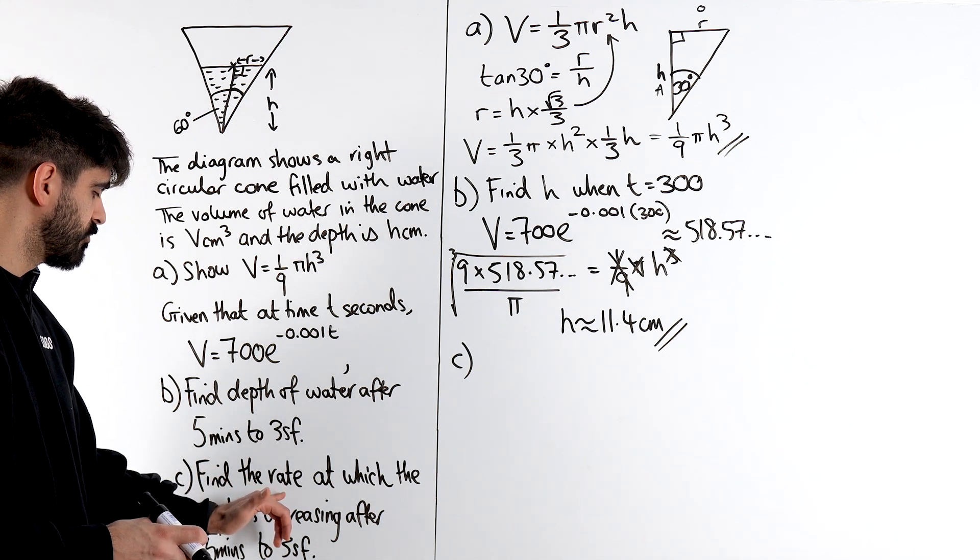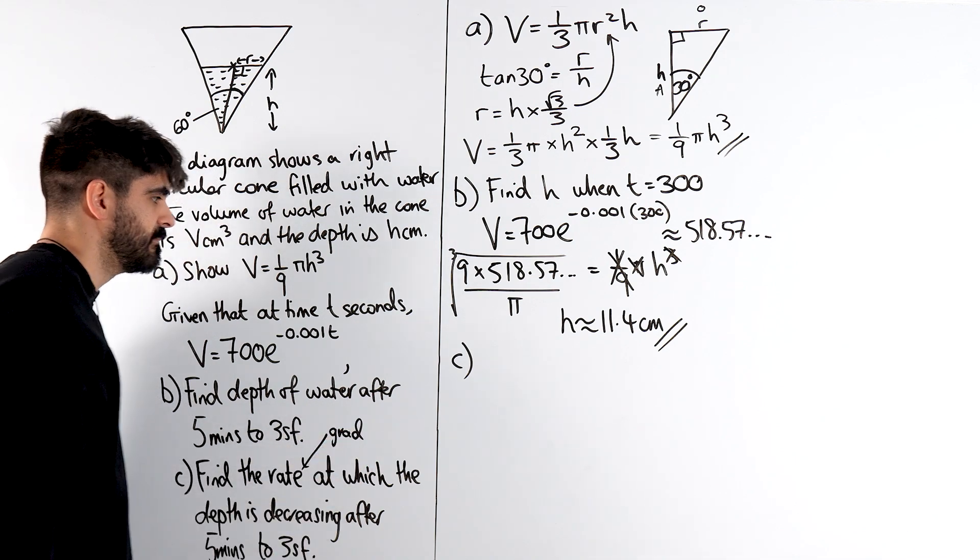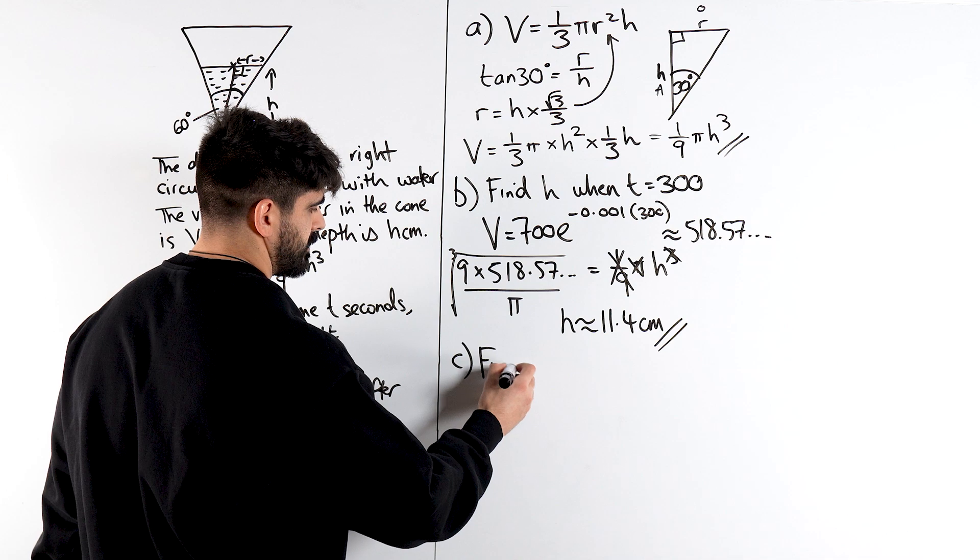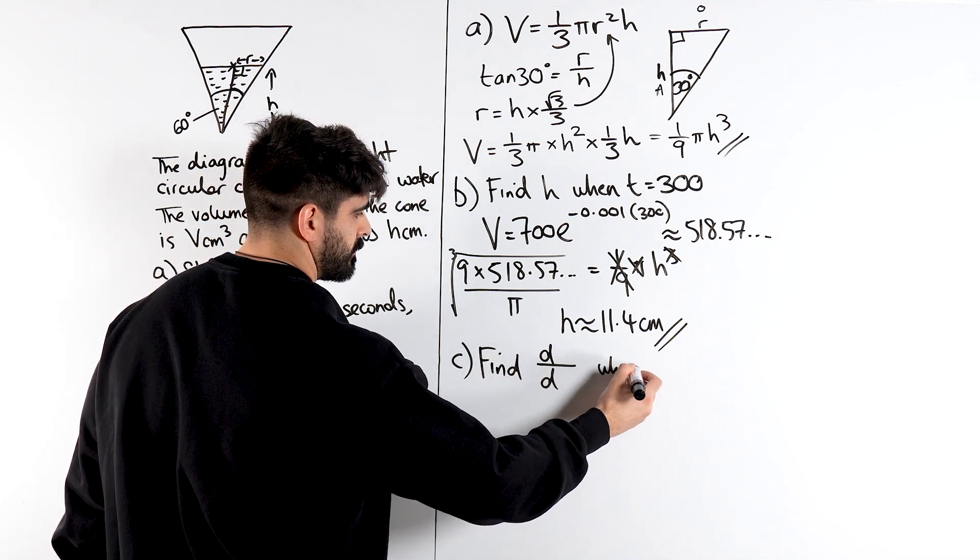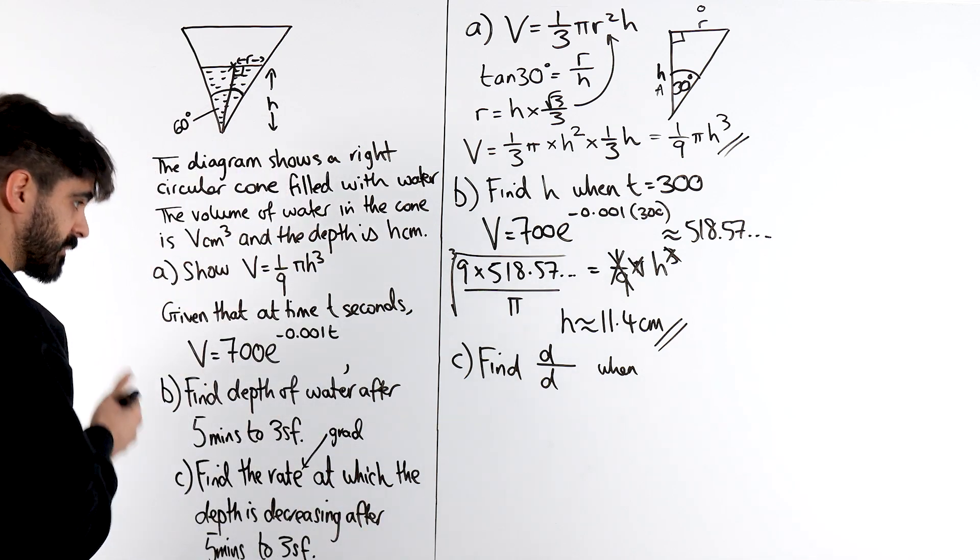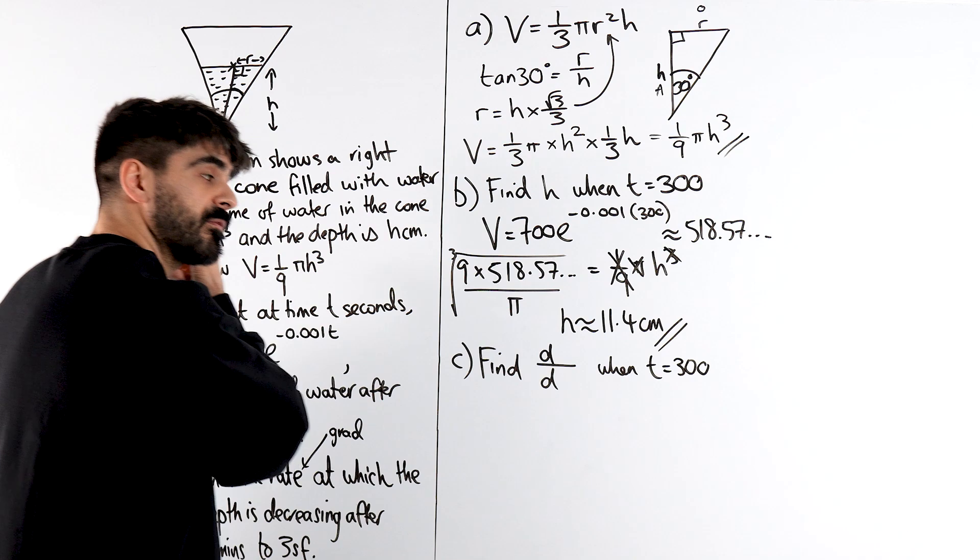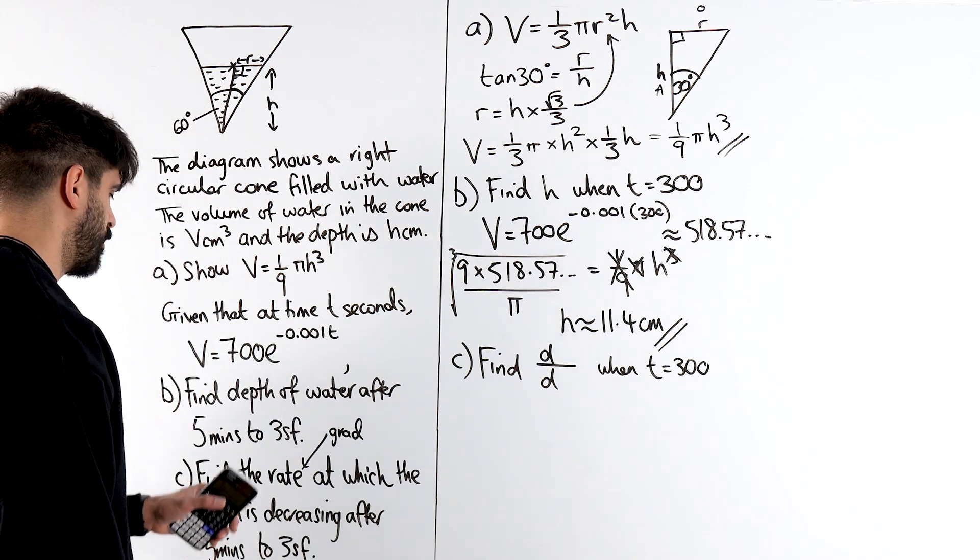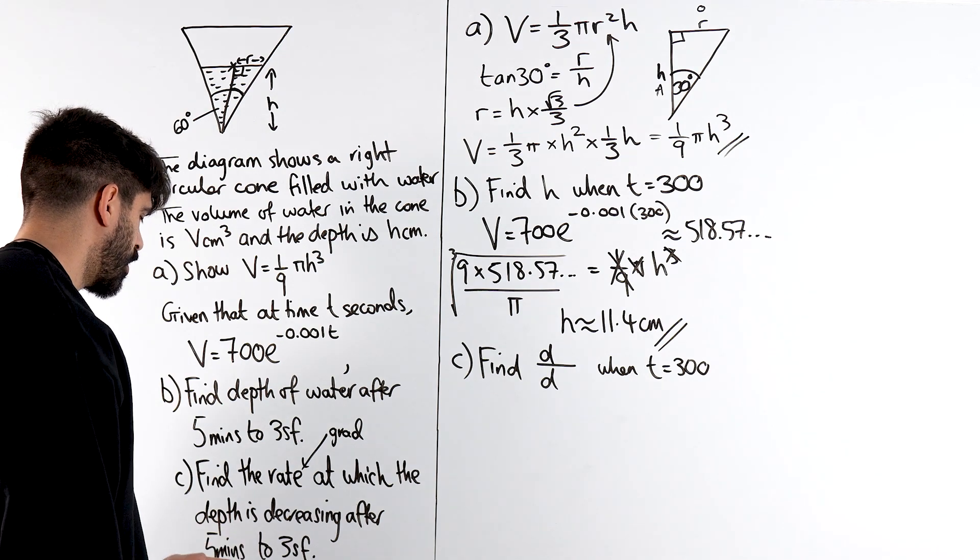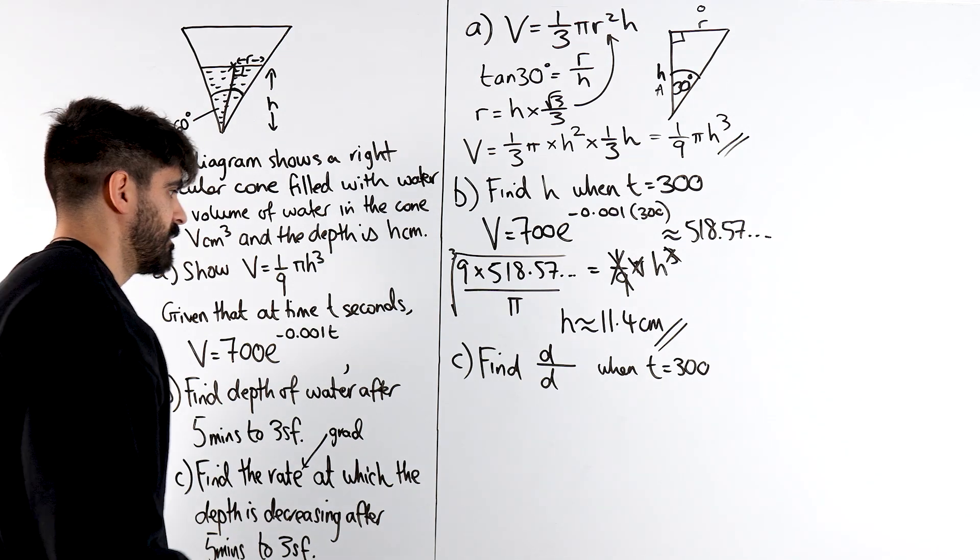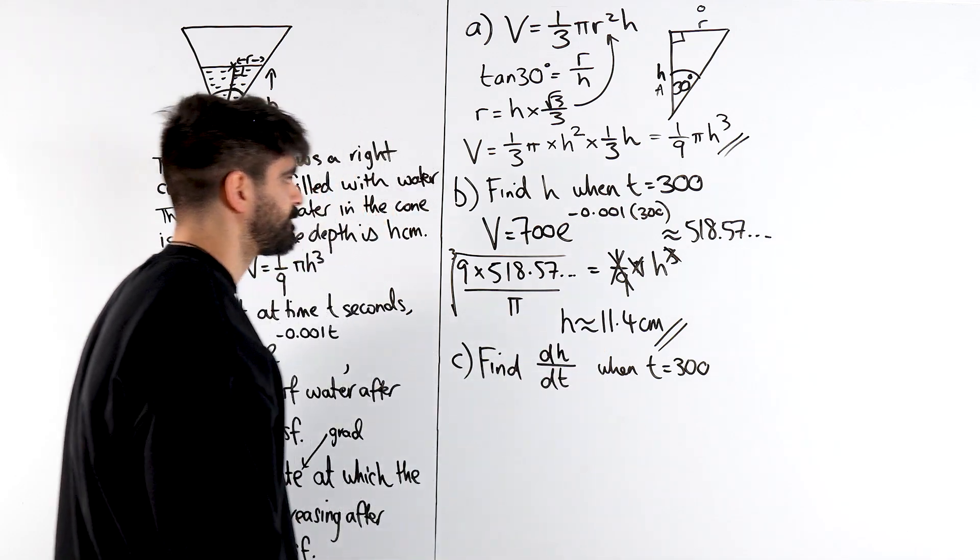Find the rate at which the depth is decreasing after five minutes. Find rate. Rate means gradient. Gradient means derivative. So, they want us to find dh/dt when after five minutes when t is 300 again. Well, we actually have the 11.4. Maybe that could be useful. What do they want? Find the rate at which the depth. Find the rate of change of depth after a certain amount of time. So, find the rate of change of h with respect to t.